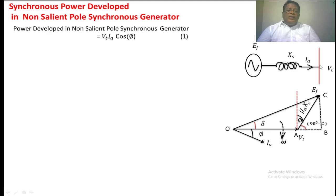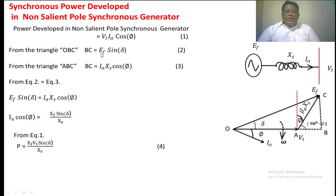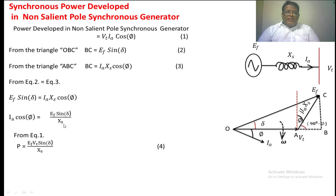The power given to the infinite bus is equal to VT × IA × cos(phi), where VT is the bus voltage, IA is the armature current, and cos(phi) is the power factor. From the outer triangle OBC we find the length BC = EF·sin(delta). Considering the inner triangle, we get BC = IA·Xs·cos(phi). Since these two are equal, we find that IA·cos(phi) = EF·sin(delta) / Xs.